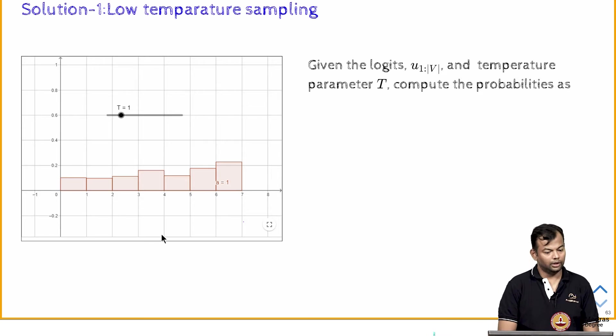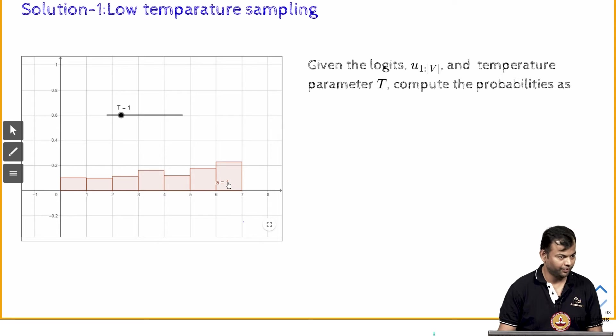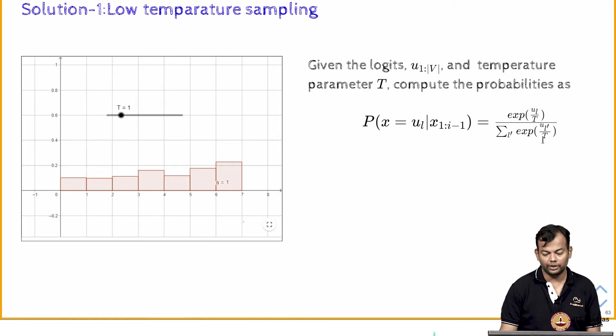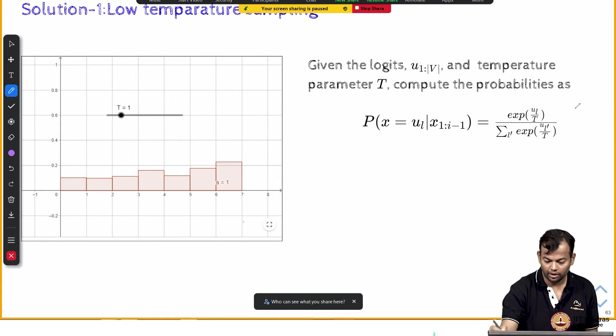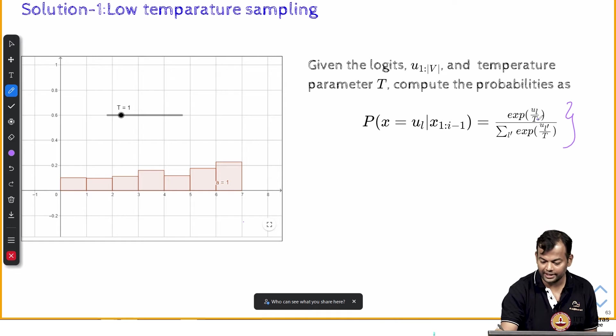So one is known as low temperature sampling, so let us see what this means. Now I have set the temperature equal to 1, which is the default value, this is what my distribution looked like. Let me just show you the formula. So, now our normal softmax equation looks like this, where T is equal to 1. If I set T equal to 1, what I get is a normal softmax equation.